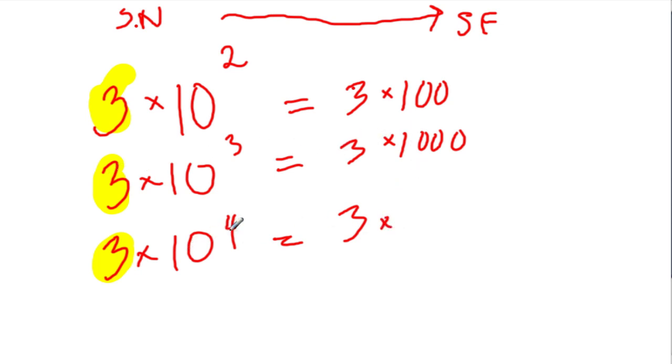And here, 10 to the fourth, this should be an exponent. Let me fix that. It's hard to see. 10 to the fourth is 10,000. So when we have 3 times 10 to the fourth, what we really have is 3 times 10,000. So we could write like this, 3 times 10,000.